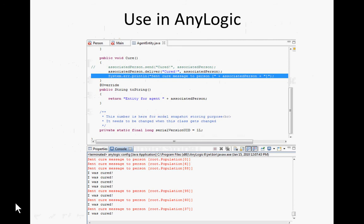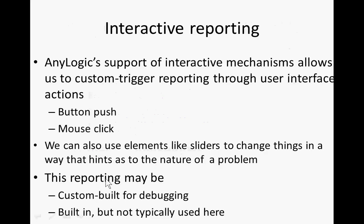For example, in a cure message you have system.out.error.println reporting 'sent cure message to so-and-so.' You can see it reporting and probably see the people who received it saying 'I was cured.' You could also set up custom UI elements so that when you push a button it starts reporting certain types of information, or use sliders to change things in a way that hints at the nature of a problem — maybe it changes the rate of something, and you see when the rate is high the problem manifests, and when it's low it doesn't.